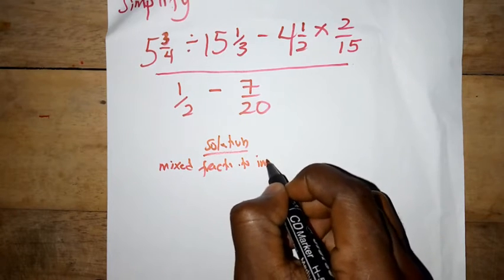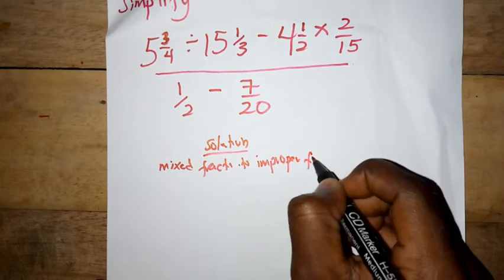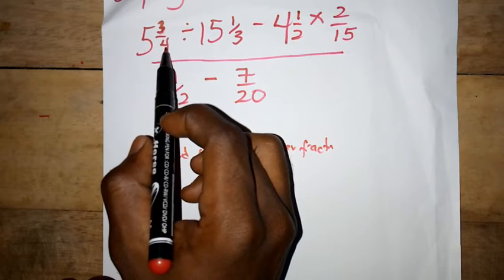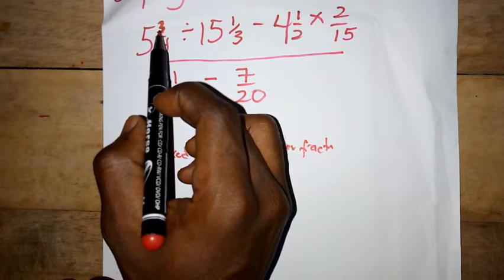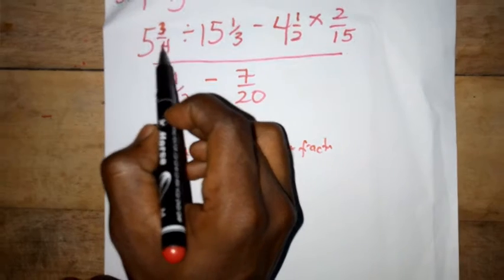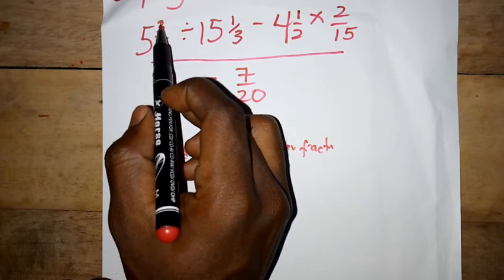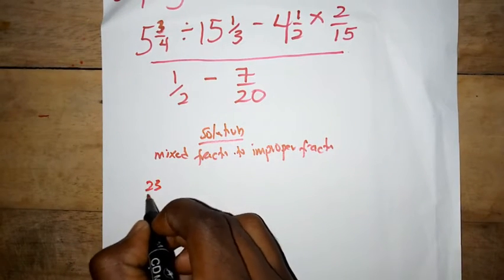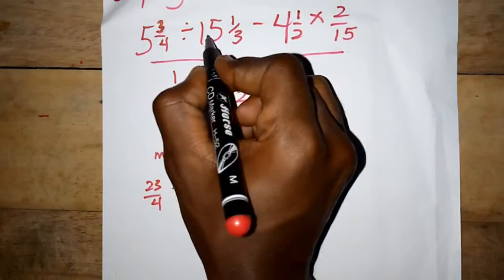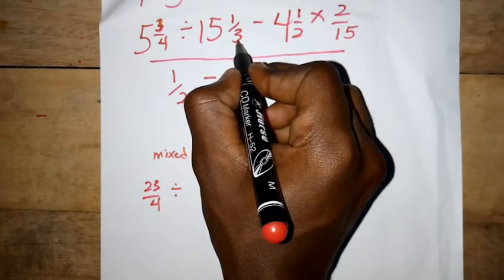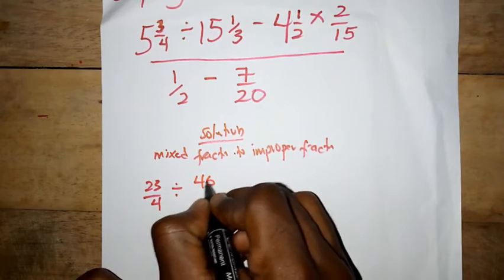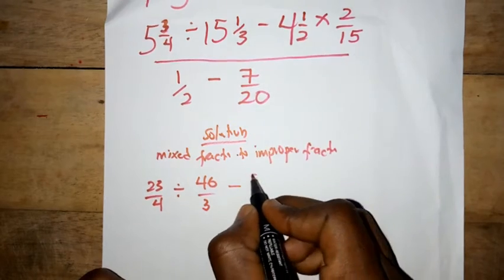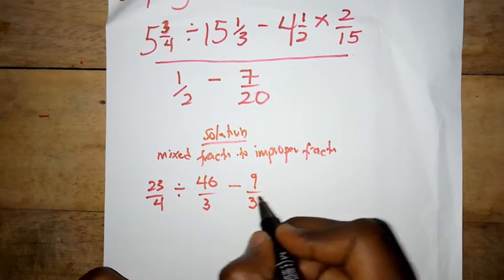Converting from mixed fraction to improper fraction: we have 5 times 4 is 20, plus 3. We multiply the whole number by the denominator and add the numerator: 5 times 4 is 20, plus 3 is 23 over 4. Then 15 times 3 is 45, plus 1 gives 46 over 3. Minus 4 times 2 is 8, plus 1 gives 9 over 2.